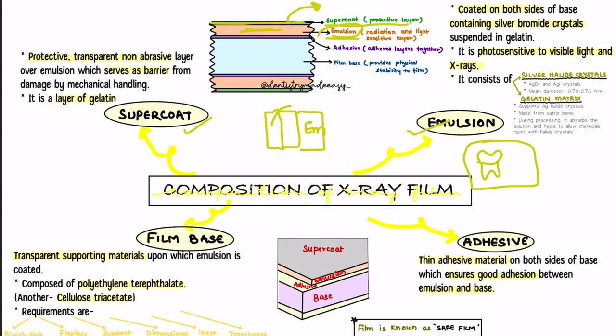The emulsion is coated on both sides of the base. The base is the centermost layer of the film, and you have emulsion on both sides of it — making it a double emulsion film. This emulsion layer contains silver bromide crystals suspended in gelatin, and these silver bromide crystals help in the image formation. The emulsion layer is photosensitive to visible light and x-rays, and films exposed to x-rays are usually known as direct exposure films.